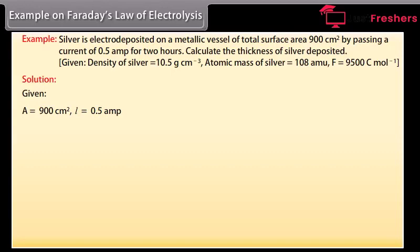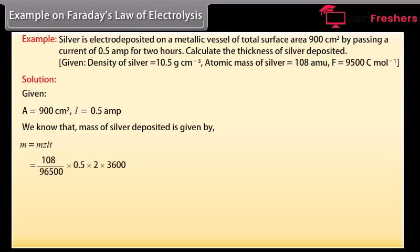Let's see the solution. Here given values are: A is equal to 900 cm square, I is equal to 0.5 ampere. We know that mass of silver deposited is given by M is equal to ZIT. By putting the values we get M is equal to 4.029 gram. We know that V is equal to M upon D. By putting the values we get V is equal to 0.3837 cm cube.